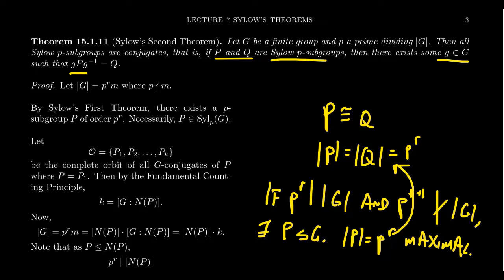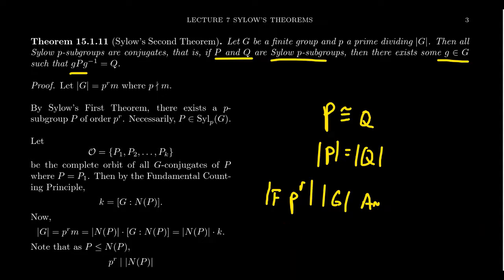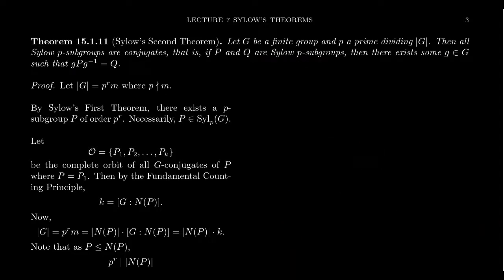The consequences of the Sylow second theorem are very important. So let's prove that all Sylow P subgroups are conjugates of each other. Let's suppose that the order of G is P to the R times M, where P doesn't divide M — that's to say R is the maximal power of P dividing the order of G. By the Sylow first theorem, there exists a subgroup P whose order is P to the R, and because it's the largest possible P subgroup, it's a maximal P subgroup — making it a Sylow P subgroup.